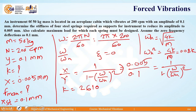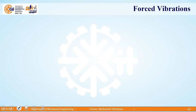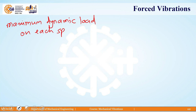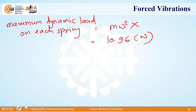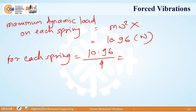The maximum dynamic load on the springs is given by m*omega^2*x. Substituting all values gives 10.96 N. For each individual spring, dividing by 4 gives 2.74 N. This is how we can solve problems on forced vibration characteristics. Thank you.